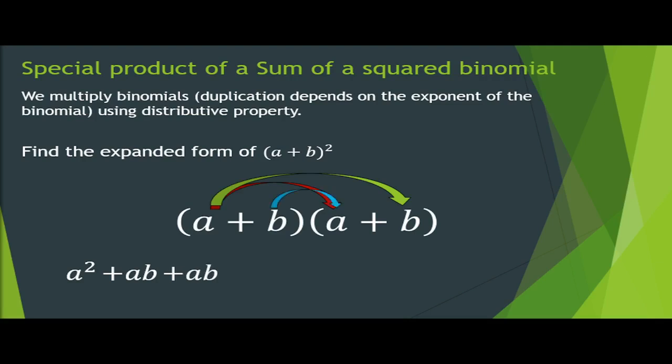Multiply the inner terms, which is b times a is equal to positive ab. And multiply the last terms, which is b times b is equal to positive b squared. Don't forget to combine the like terms: ab plus ab is equal to 2ab. And now we have a squared plus 2ab plus b squared.